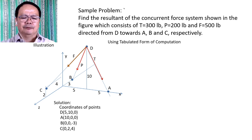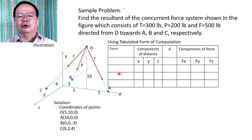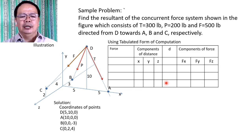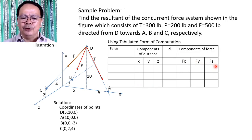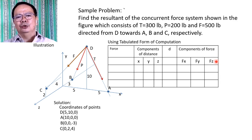Using the tabulated form of computation, the resultant can be computed by filling up a prepared table for easy computation. The table has the following columns: the first column is for the magnitude of the force; the second column is for the components of the distance from which the force is directed; then the column for distance d between the points; and the next three columns are Fx, Fy, and Fz, representing the magnitude of the force in the x, y, and z directions.